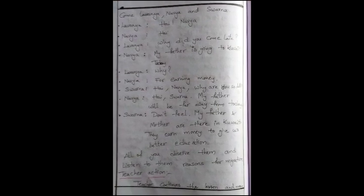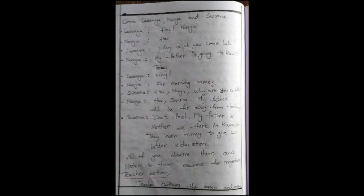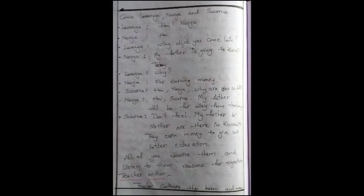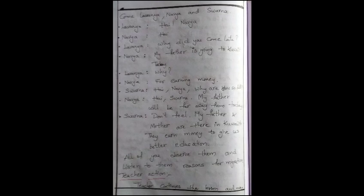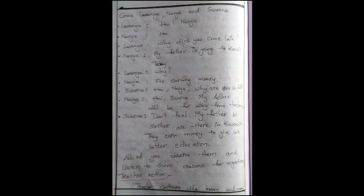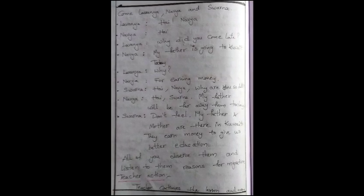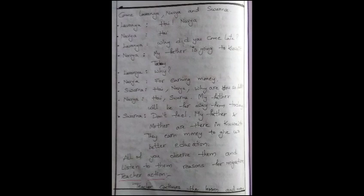Come Lavanya, Navya and Swarna. Lavanya: hi Navya. Navya: hi Lavanya, why did you come late? My father is going to Guyat today. Lavanya: why? Navya: for earning money. Swarna: hi Navya, why are you so dull? Navya: hi Swarna, my father will be far away from today. Swarna: don't feel, my father will be far away from today as well. His mother are there in Guyat. They earn money to give us better education. All of you observe them and listen to them. Reasons for migration, this is the role play.